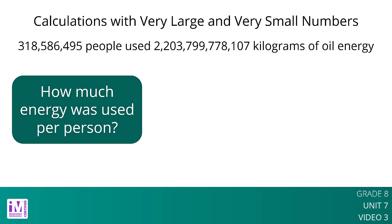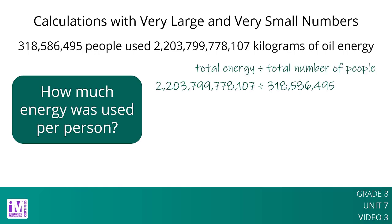The amount of energy per person is the total energy divided by the total number of people. For example, we can use powers of 10 to estimate the total energy as 2 times 10 to the 12th power and the population as 3 times 10 to the 8th power. So the amount of energy per person in the US is roughly 2 times 10 to the 12th power divided by 3 times 10 to the 8th power.